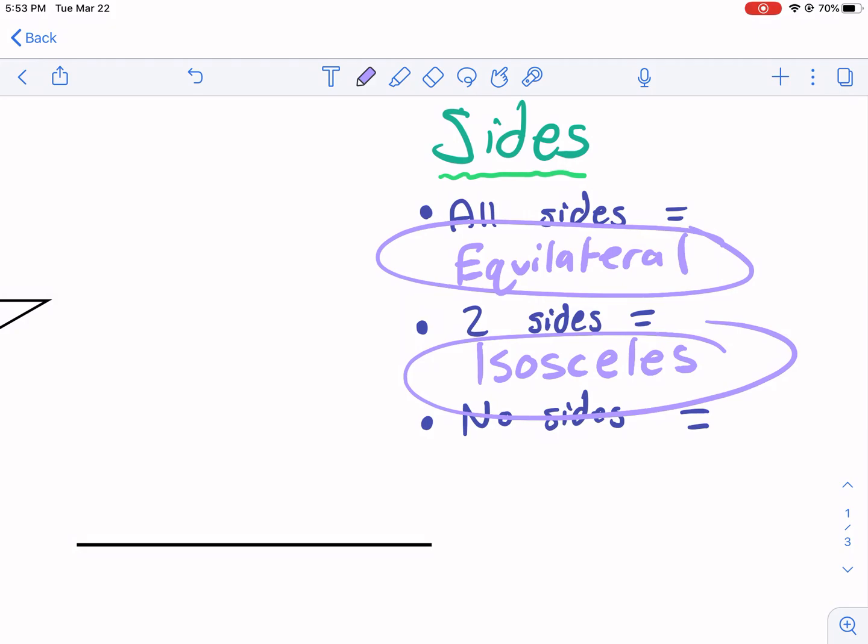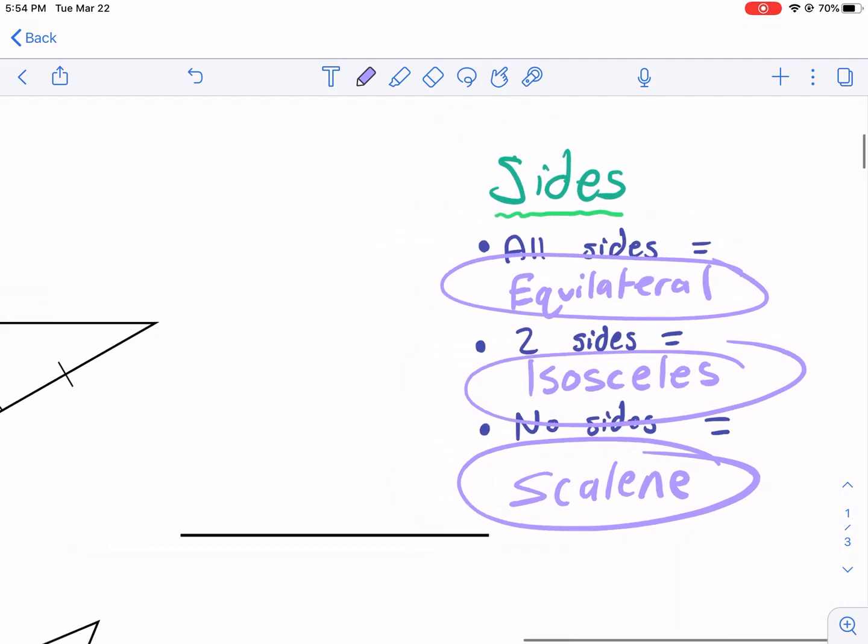And then no sides equal is called scalene. So iso is like by itself. So there's one side that's by itself that's not equal. Scalene, it's just kind of in its own category. Equilateral, that's the easy one to remember because all the sides are equal.